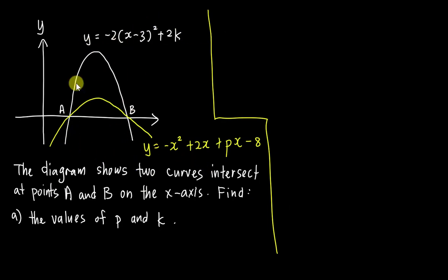So obviously here you can see you have two curves. This curve is with this equation and the yellow color curve is with a yellow color equation. The question tells you A and B are both the intersection of both curves at the x-axis, and it asks you to find P and K.